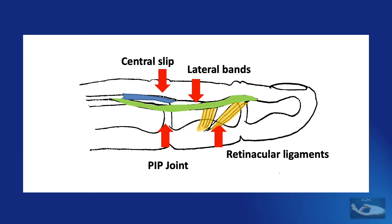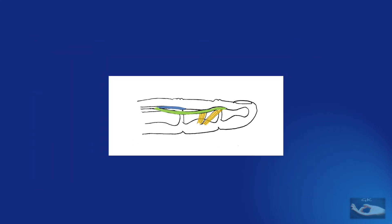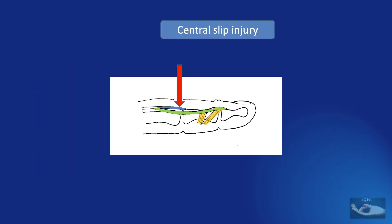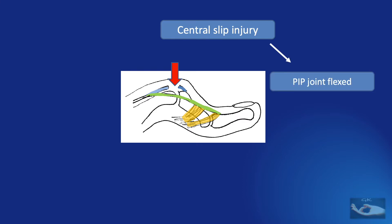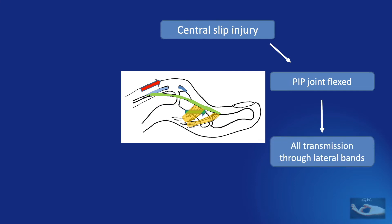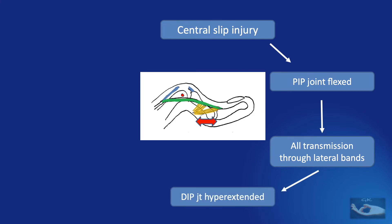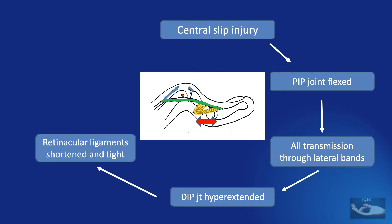All the changes in the Boutonniere deformity occur mainly at these three structures. When there is an injury to the central slip, as in trauma, it leads to flexion at the PIP joint because most of the extensor force on the dorsal aspect of the PIP joint is lost. All forces are then diverted through the lateral bands to the distal interphalangeal joint, which gets hyperextended due to the additional forces of extension. In this position, both the transverse and oblique retinacular ligaments are in a shortened position and in due course get contracted.